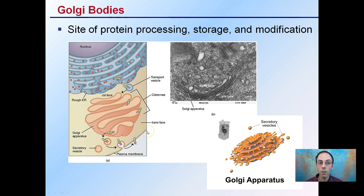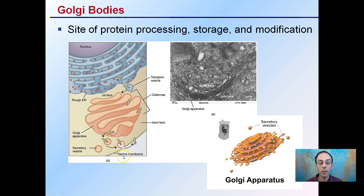Golgi bodies are the site of protein processing, storage, and modification. You can see here's our nucleus, here's our rough ER, and then we would go to the Golgi apparatus. This tends to be one of the more finishing bodies, where proteins produced from the rough ER are modified before being released outside the cell or put into the cell membrane.